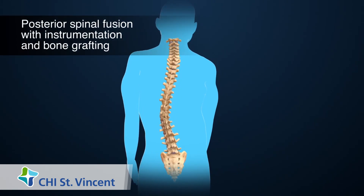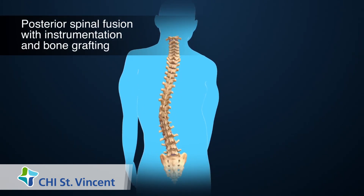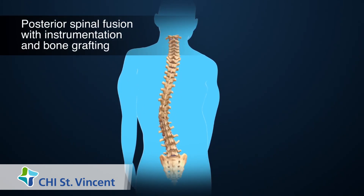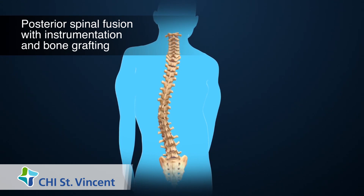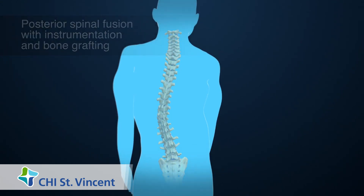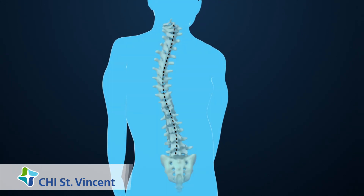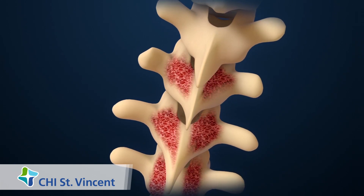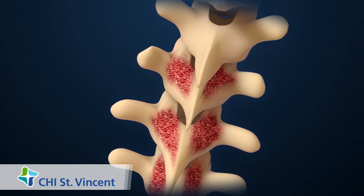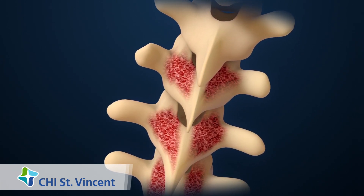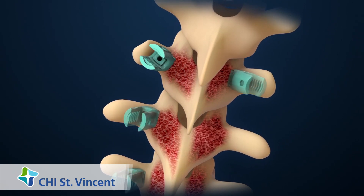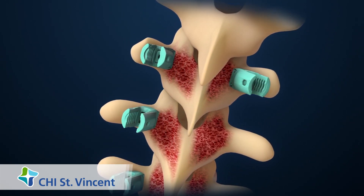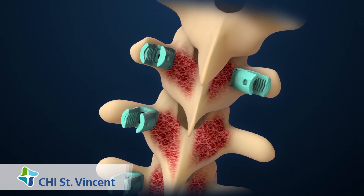The most common surgical procedure to repair scoliosis is called posterior spinal fusion with instrumentation and bone grafting. To begin, the surgeon will make an opening over the area of the curve in the spine. The surfaces of the vertebrae will be roughened to help stimulate the bones to heal together. The surgeon will place screws, hooks, or wires into the vertebrae.